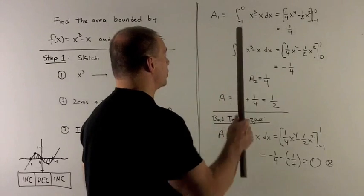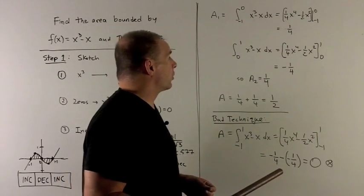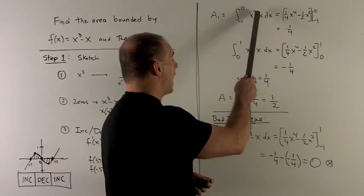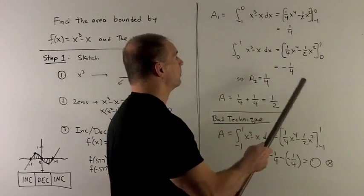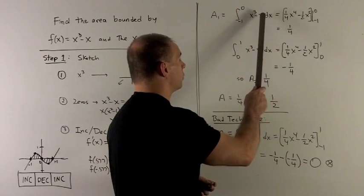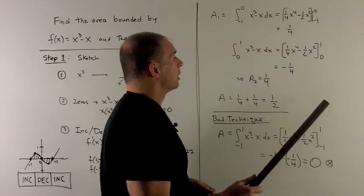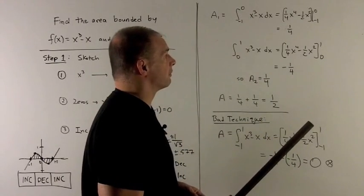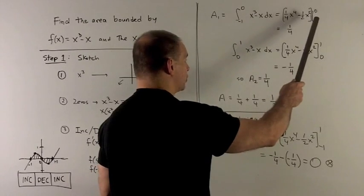Let's take a look. For my first region, we're completely above the x-axis. So I just take the anti-derivative: add one, flip it over, gives me (1/4)x⁴, and then add one. There's a one here, so that becomes x². Flip it over, becomes 1/2, and we pick up our minus sign from before. I'm going to evaluate at each point.